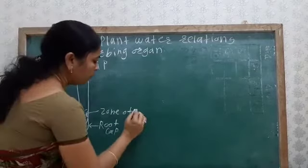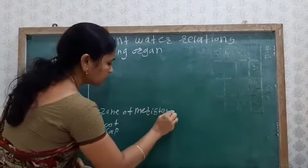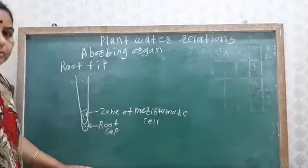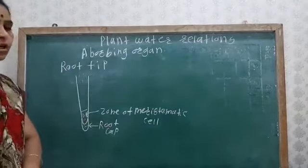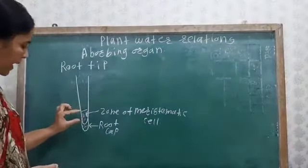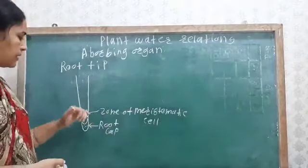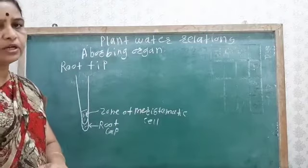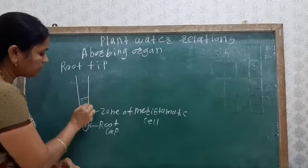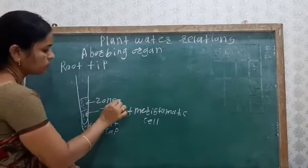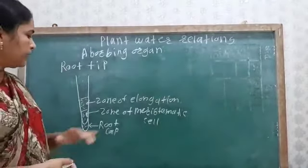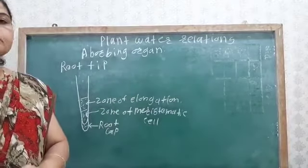This zone is also known as the meristematic zone or meristematic tissue, or the region of cell division, where cell division takes place. Above the meristematic zone is the zone of elongation, where enlargement of the cell takes place — only enlargement, not division. The cytoplasmic content of the cell increases, causing enlargement in this zone.